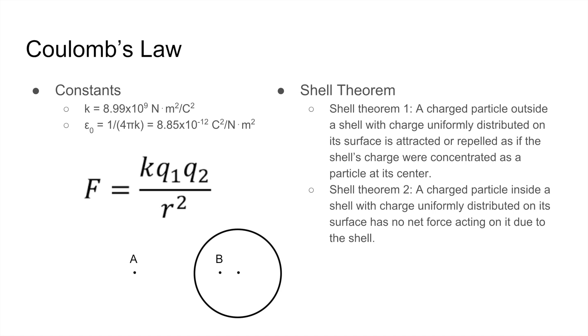There's also the Shell Theorem for Charges. So Shell Theorem 1 says that if a charged particle is placed outside of a shell, with charge uniformly distributed on that shell's surface, the charge is either attracted or repelled, depending on the sign, of course, as if the shell's charge were concentrated as a particle at the center. So in that diagram down there, you see that A would behave with that shell of charge, as if that charge was at the center.